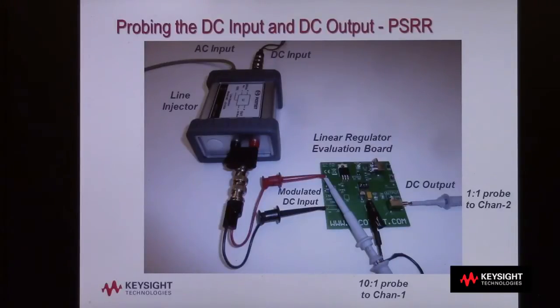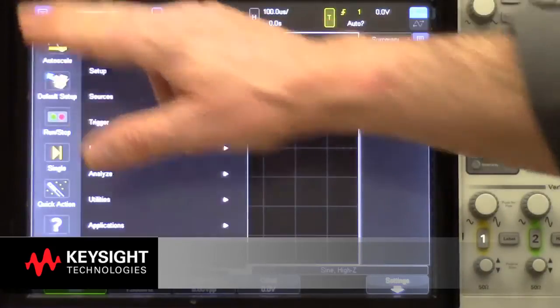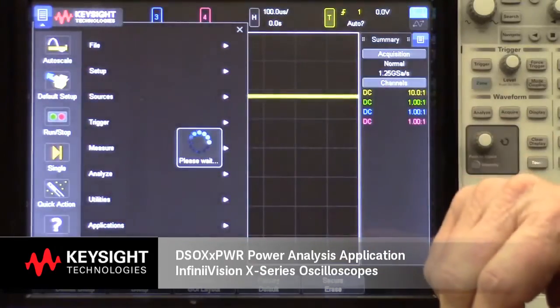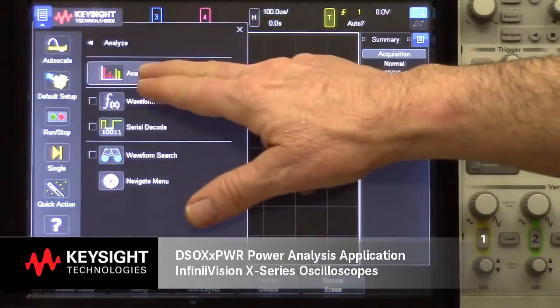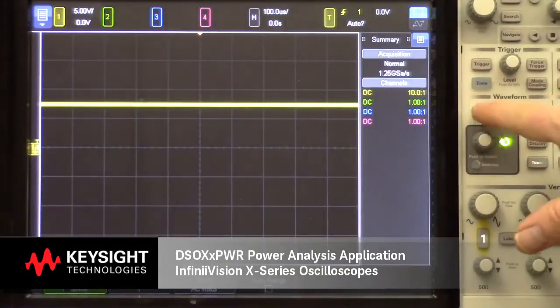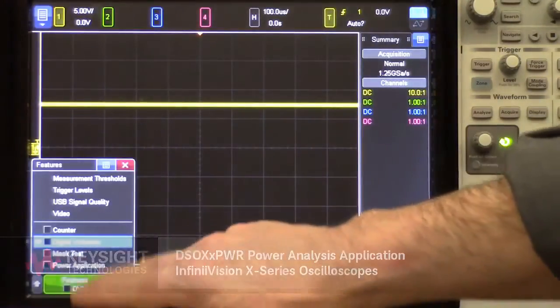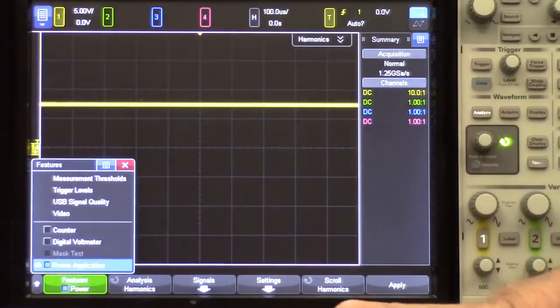Let's start making measurements. I'll begin with a default setup. Then I'll go into the analyze menu, which there's actually a front panel key that you can access this menu directly. Then select the power application.